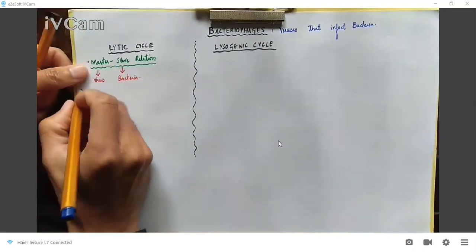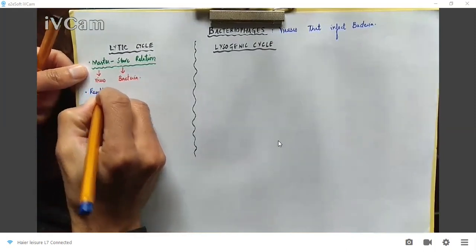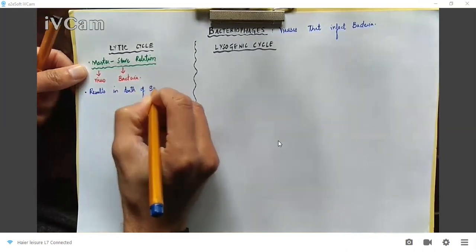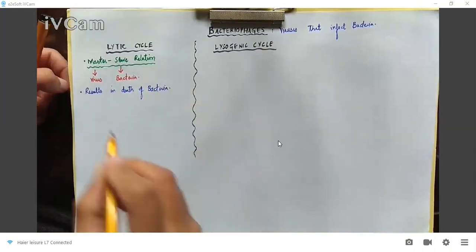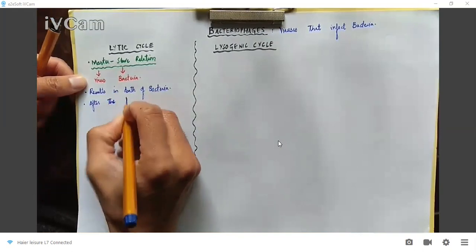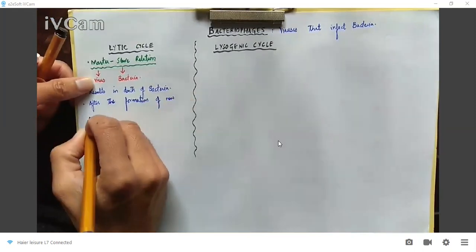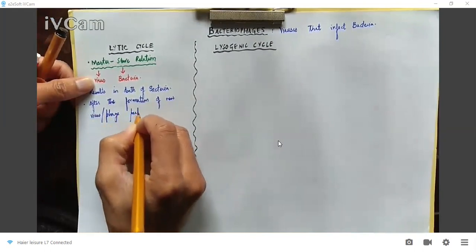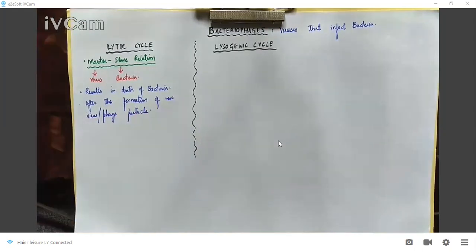The lytic cycle results in the death of bacteria after the virus has completed its life cycle. It results in the death of bacteria after the formation of new phage particles — that is, the formation of new virus or phage particles. This is why we call it the lytic cycle.